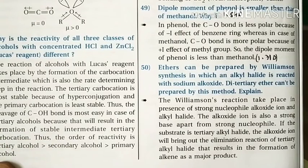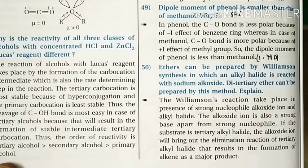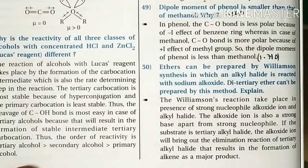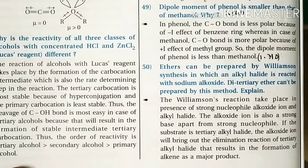Question 50: Di-tertiary ether cannot be prepared by Williamson synthesis. Williamson synthesis occurs by an SN2 mechanism in which sodium alkoxide reacts with an alkyl halide. To prepare di-tertiary butyl ether, sodium tertiary butoxide must react with tertiary butyl bromide. However, tertiary alkyl halides prefer elimination over substitution, so sodium tertiary butoxide reacts with tertiary butyl bromide to favor elimination and form isobutylene rather than the ether.